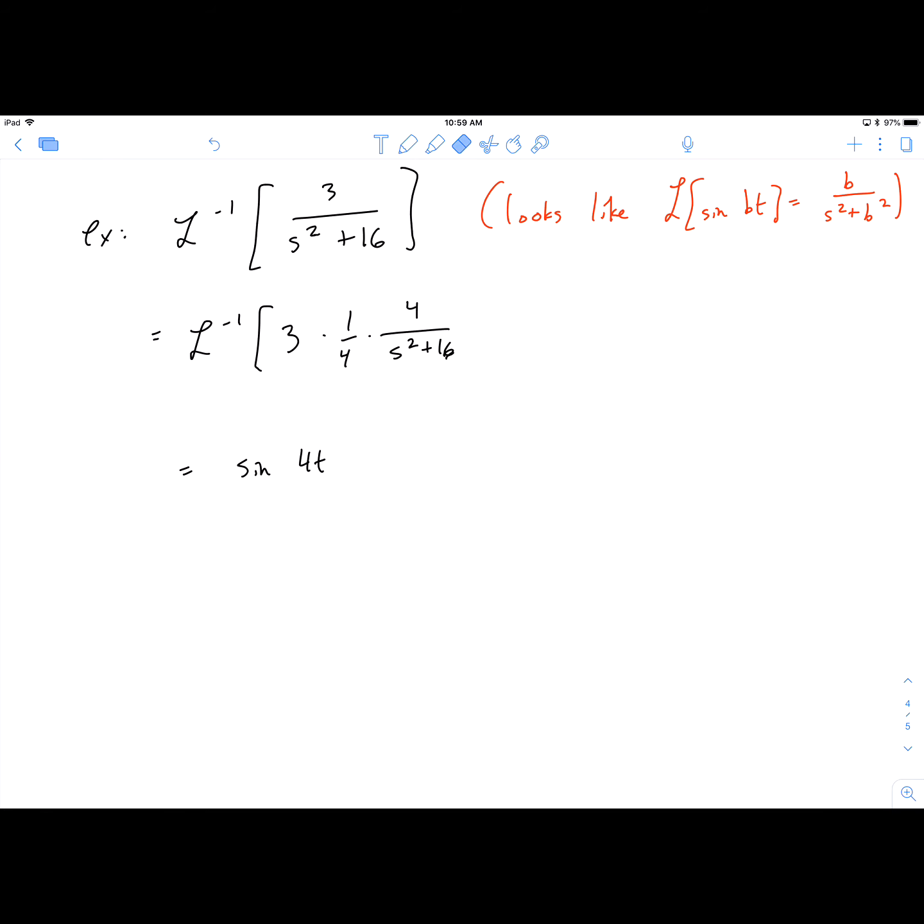So once we do that, then this part turns into sine of 4t, and the 3 fourths gets carried along. So I can show one more step where we can pull out the 3 and the 1 fourth. And so the answer is 3 fourths sine of 4t.